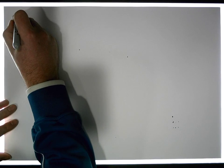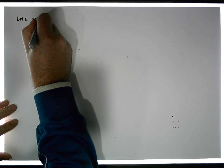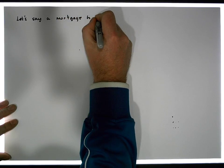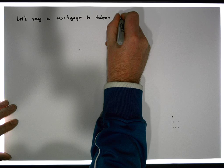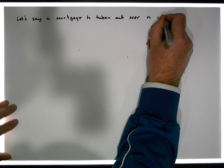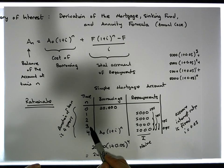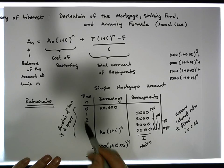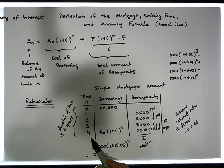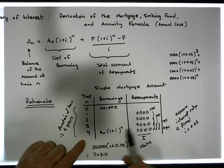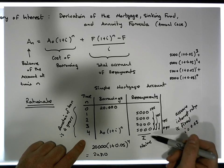Let's say a mortgage is taken out over N years. In the four-year example you can see there were five lines in the schedule but only four repayments. Let's keep that in mind.